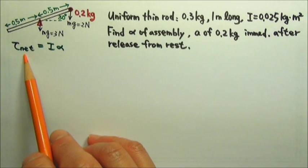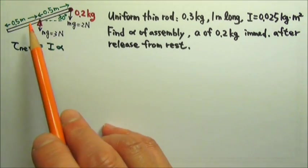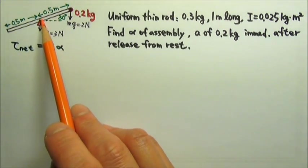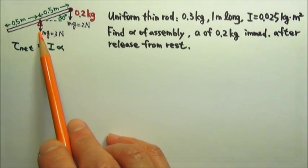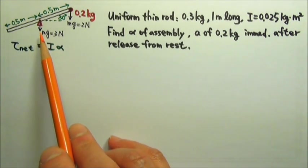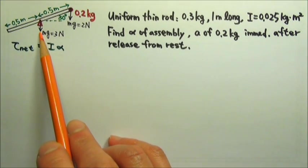Now let's look at the net torque. There are two forces, other than the force from the axle which doesn't give us any torque. This force also goes through the axle, therefore the lever arm for this 3 newtons is also zero. This force does not give us any torque.